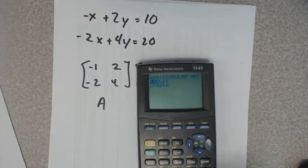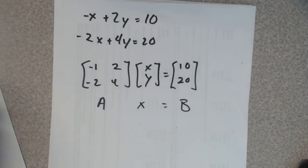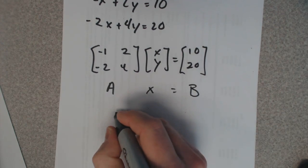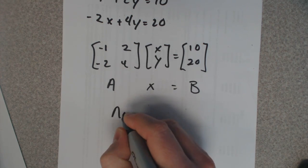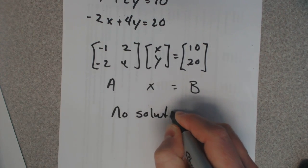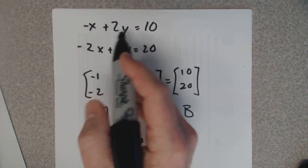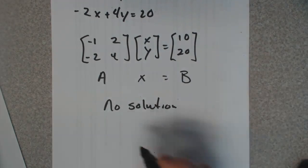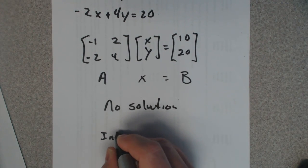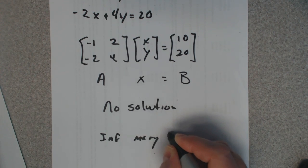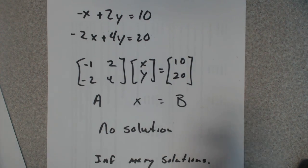So this method, you can't do anything else with this method. So you've got two options now. The answer is either no solution, meaning there's not two numbers you can plug in and work into both equations, or it's infinitely many solutions.